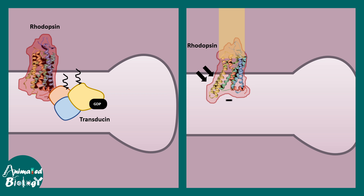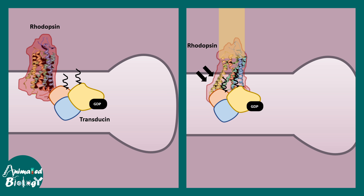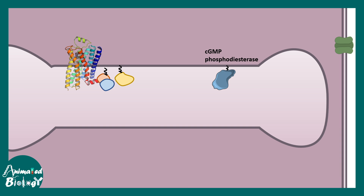The conformational change in rhodopsin — triggered by light versus darkness — drives GDP hydrolysis and replacement with GTP. GTP-bound transducin is the active form, and active transducin translocates to activate an enzyme known as cyclic GMP phosphodiesterase. All of this occurs inside the rod cell.